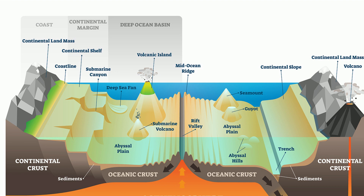One of the flattest places on earth is at the end of the continental rise. The abyssal plain is a large area of flat land that covers almost half the ocean. These were formed when most of the hills and valleys at the bottom of the ocean were buried under a layer of sand and mud a long time ago.